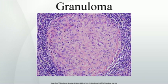Rheumatic fever: Rheumatic fever is a systemic disease affecting the peri-arteriolar connective tissue and can occur after an untreated Group A beta-hemolytic streptococcal pharyngeal infection. It is believed to be caused by antibody cross-reactivity.